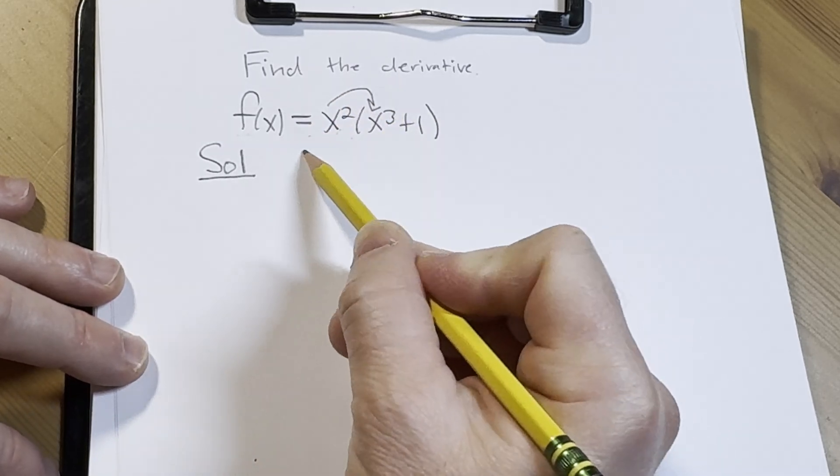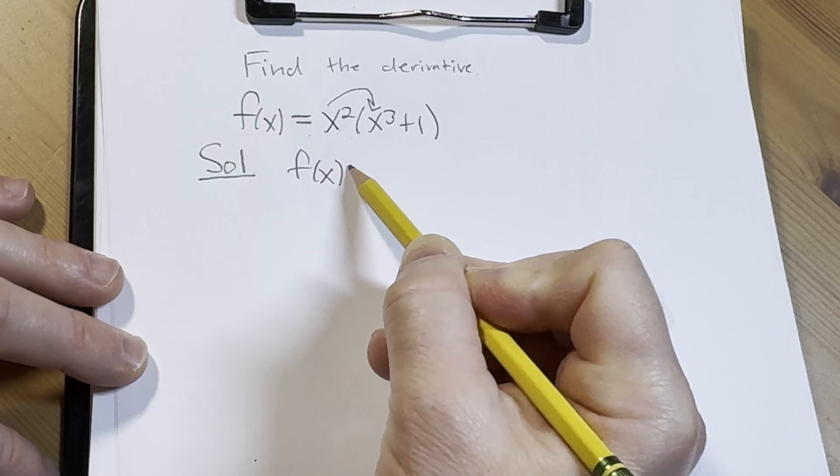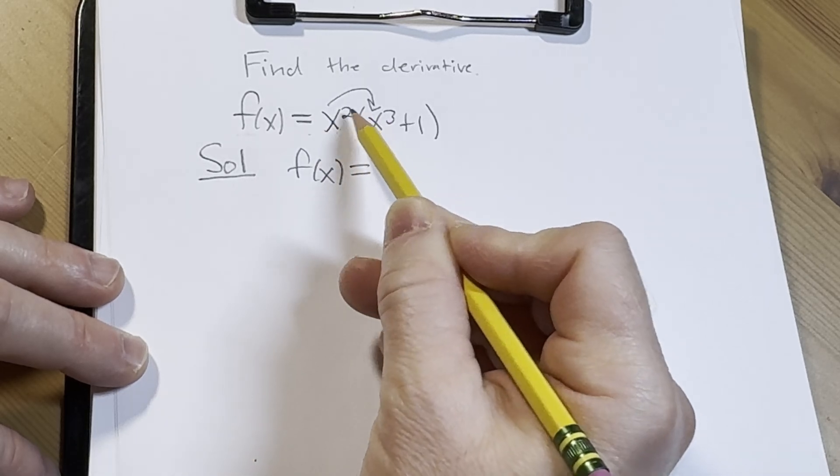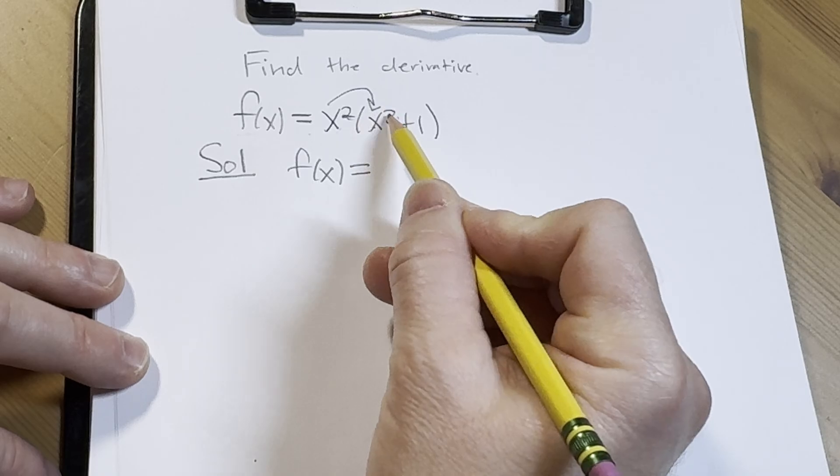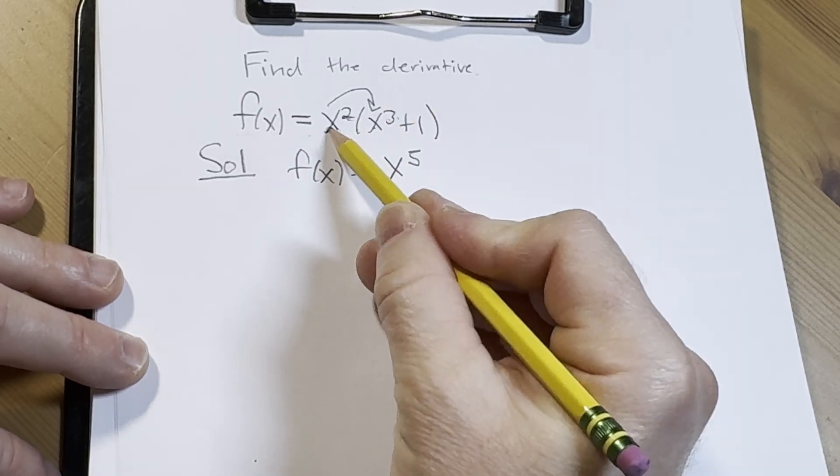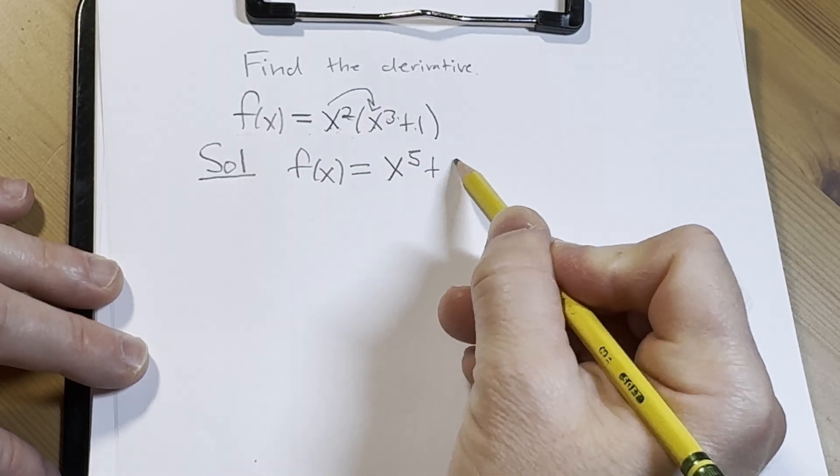So we're going to multiply. So we have f(x) equals x squared times x cubed. We add the exponents when we multiply because the bases are the same. 2 plus 3 is 5. And then x squared times 1 is just x squared.